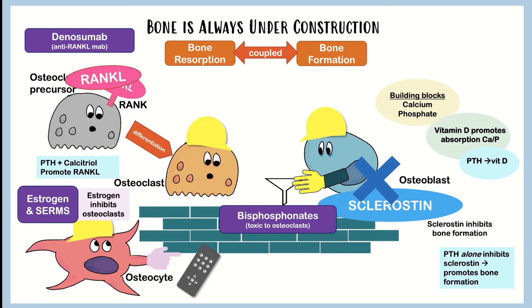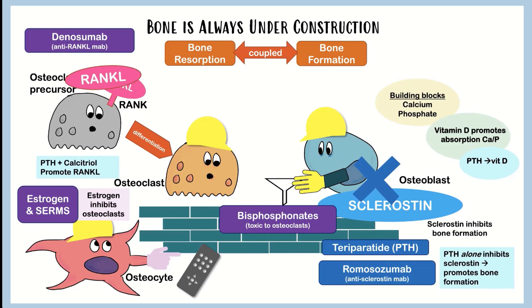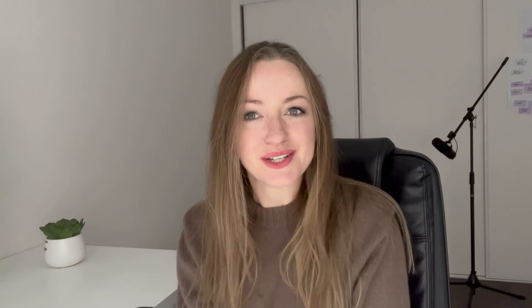We have another group of drugs called the anabolics or the bone builders, and these are teriparatide and romosozumab. Teriparatide is literally just a PTH analog - it's just like giving PTH - whereas romosozumab is an antisclerostin antibody, so it's going to block sclerostin and promote bone formation. So that was osteoporosis medications in a nutshell. I hope you enjoyed this video and I hope to see you again soon for some more higher learning. Bye!